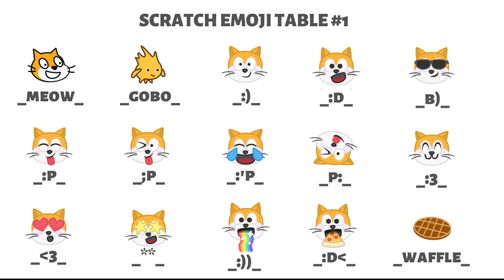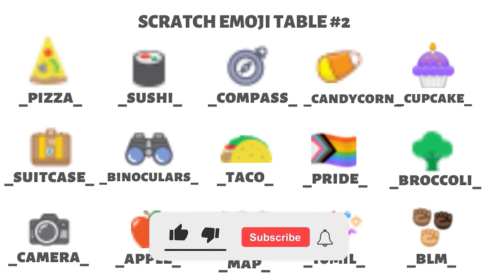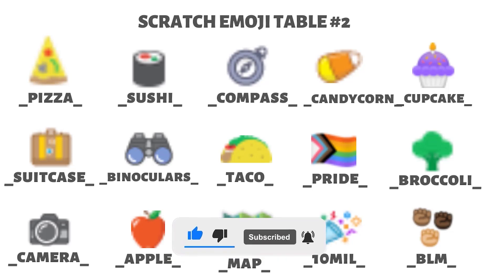Okay, so this is table number one, and next we're going to see Scratch emojis table number two, which contains various numbers of food and items. I'll let you look at these for a while.